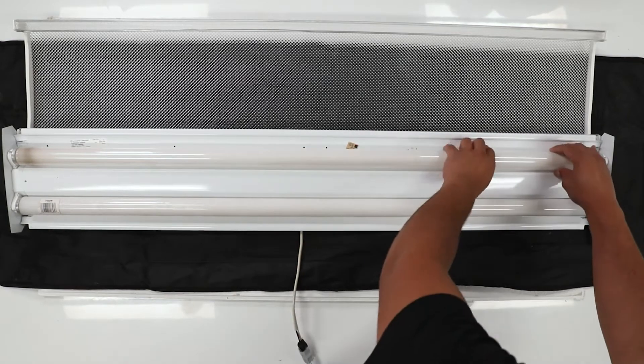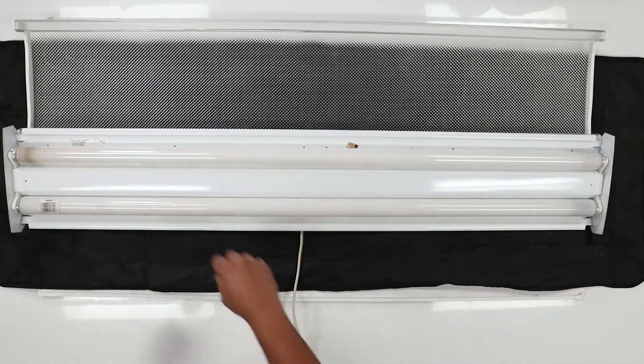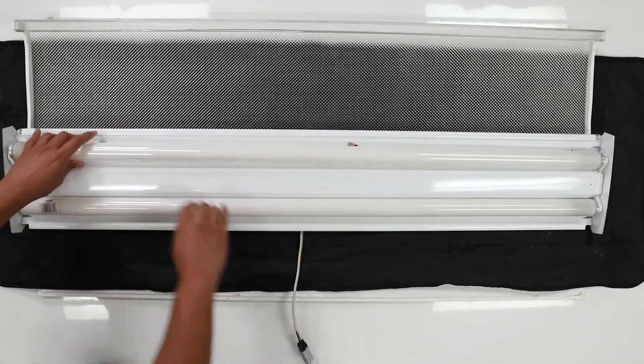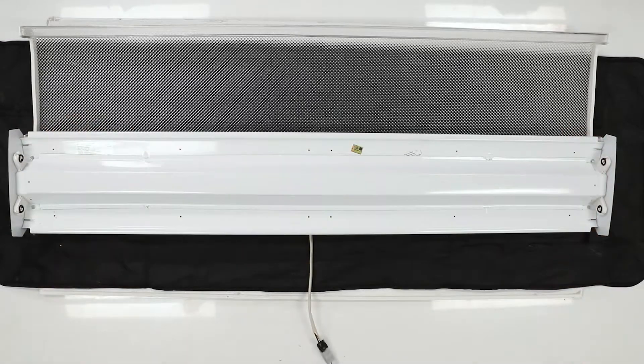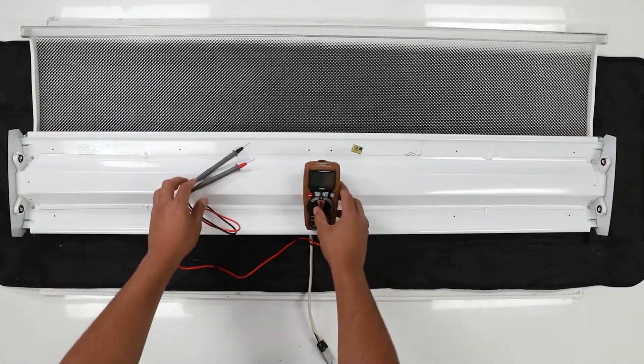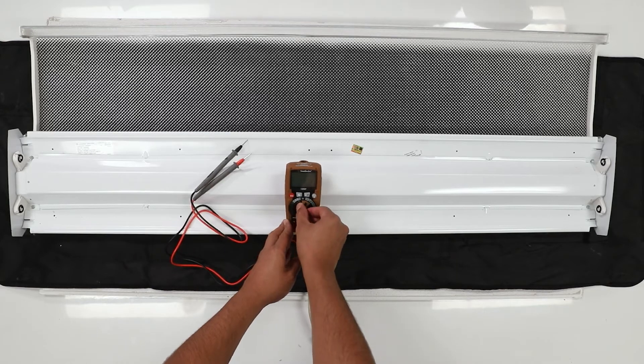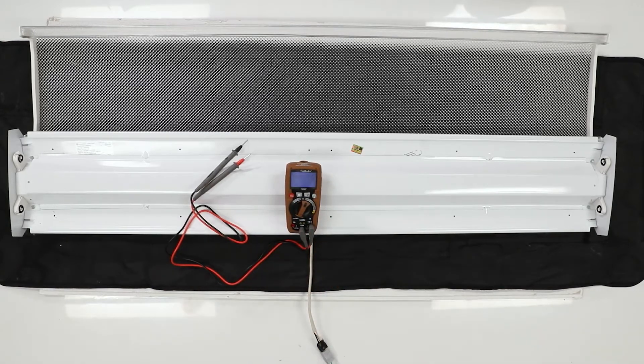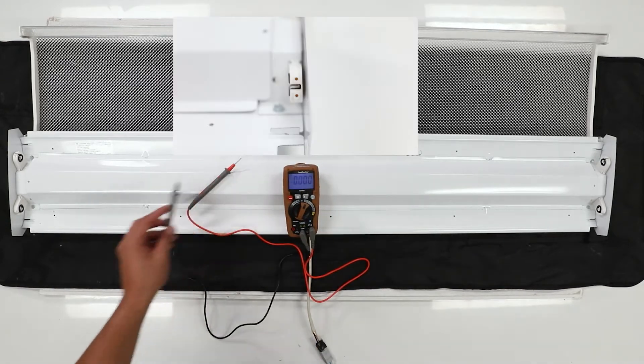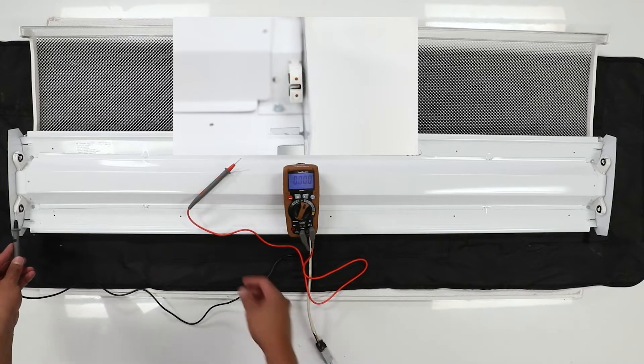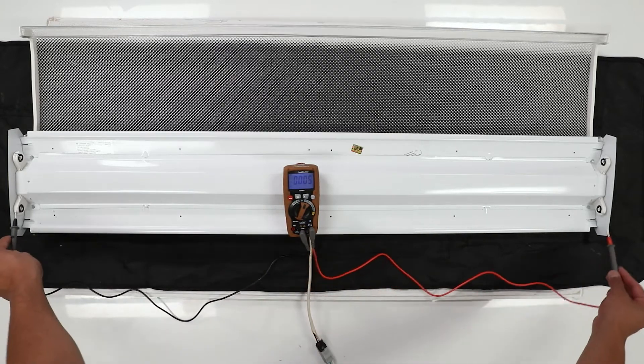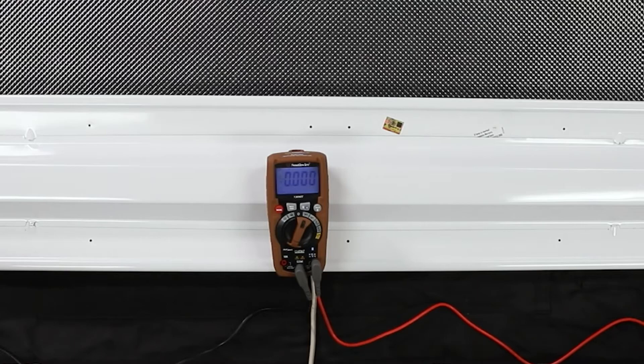Carefully remove your old tubes. Next, use your multimeter to ensure that there is no power flowing to your fixture. Connect one leg of the meter to one socket and one leg to the other. If the meter shows zero, you are good to proceed.